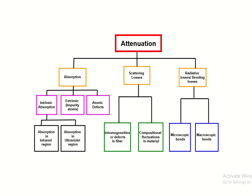Under absorption, we have seen three major factors that cause absorption in optical fiber communication. First is intrinsic absorption, due to the material used for the optical fiber. Second is extrinsic absorption, caused by impurities. Third is absorption due to atomic defects.